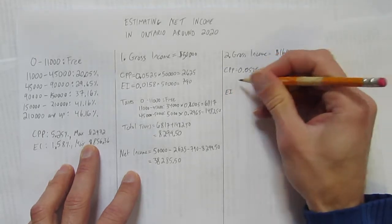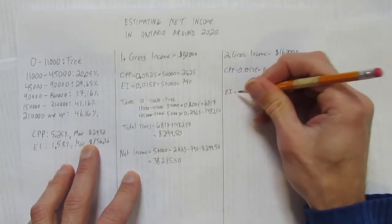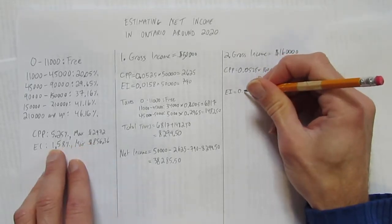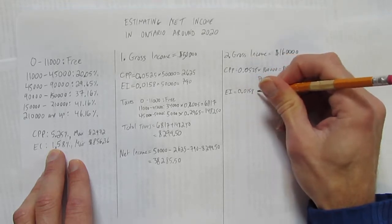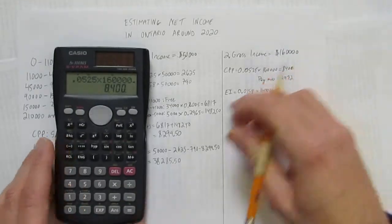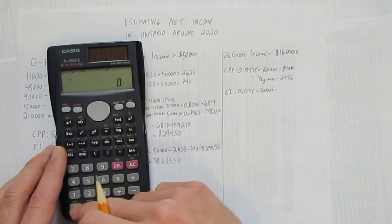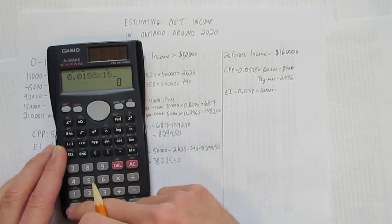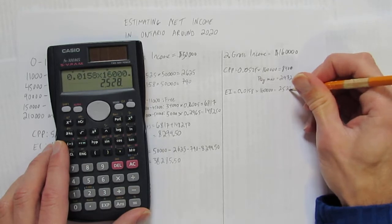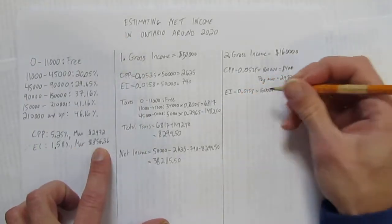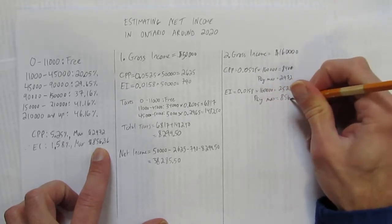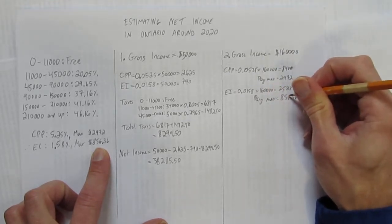And usually, not always, but they're close. Usually the maxes are set close. If you pay the max CPP, you're probably going to go over for EI too. Let's look. Again, convert to decimal and multiply by your income. So the EI for 2020 is 1.58% or 0.0158 times your gross income. And you get $2,528, which is well over the maximum. So you pay the max, which equals $856.36.